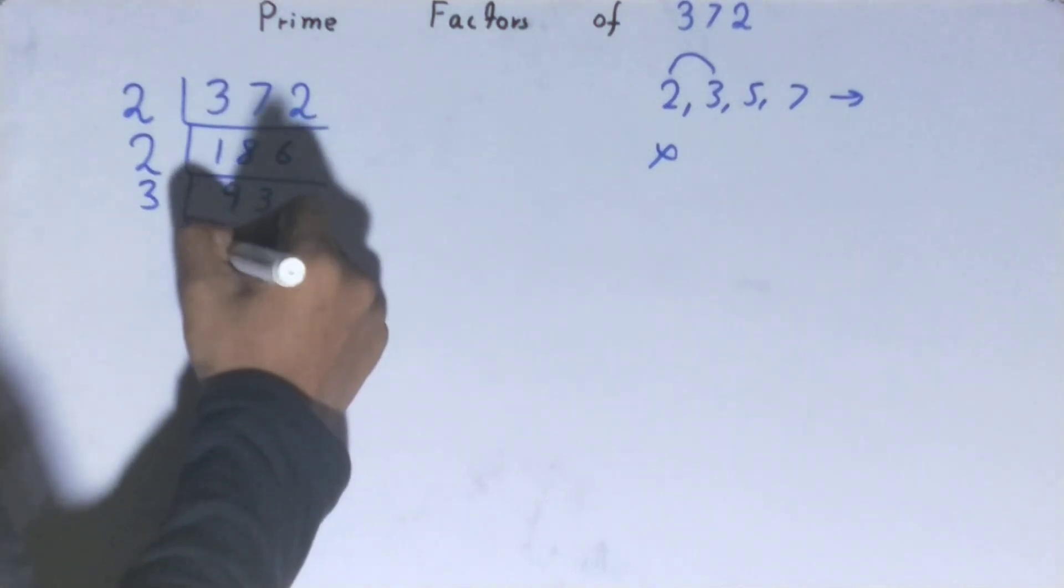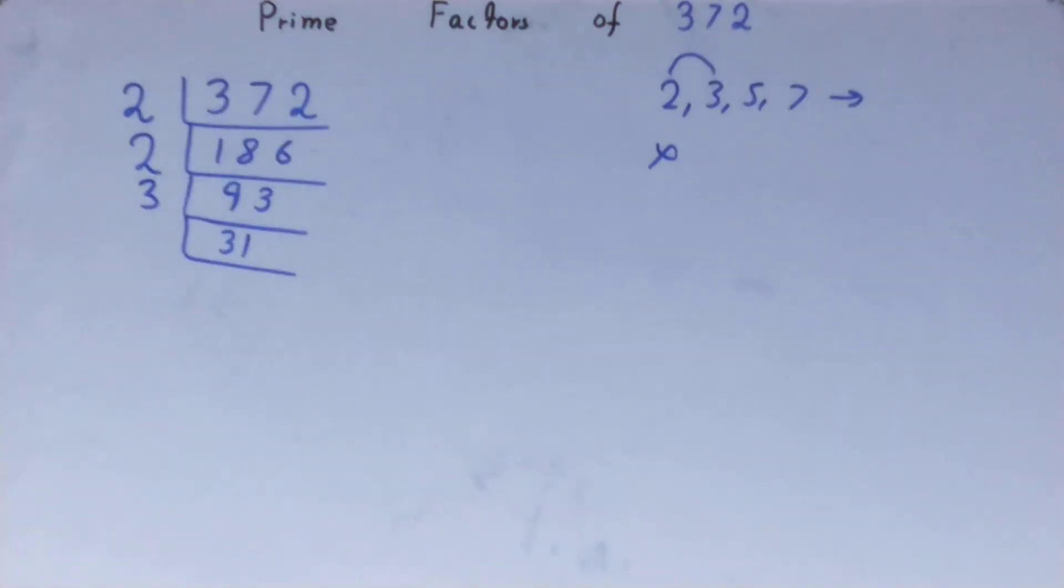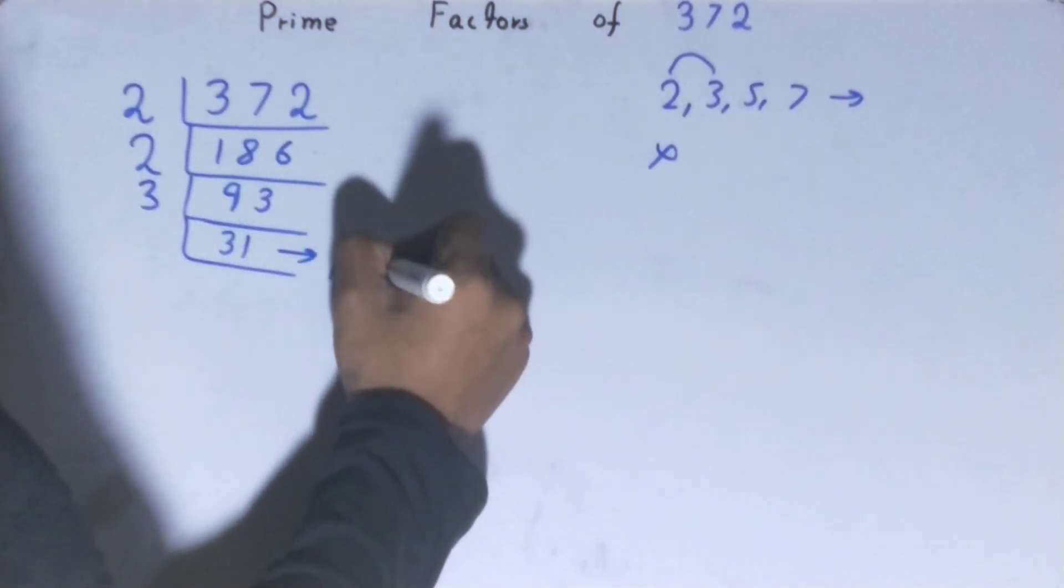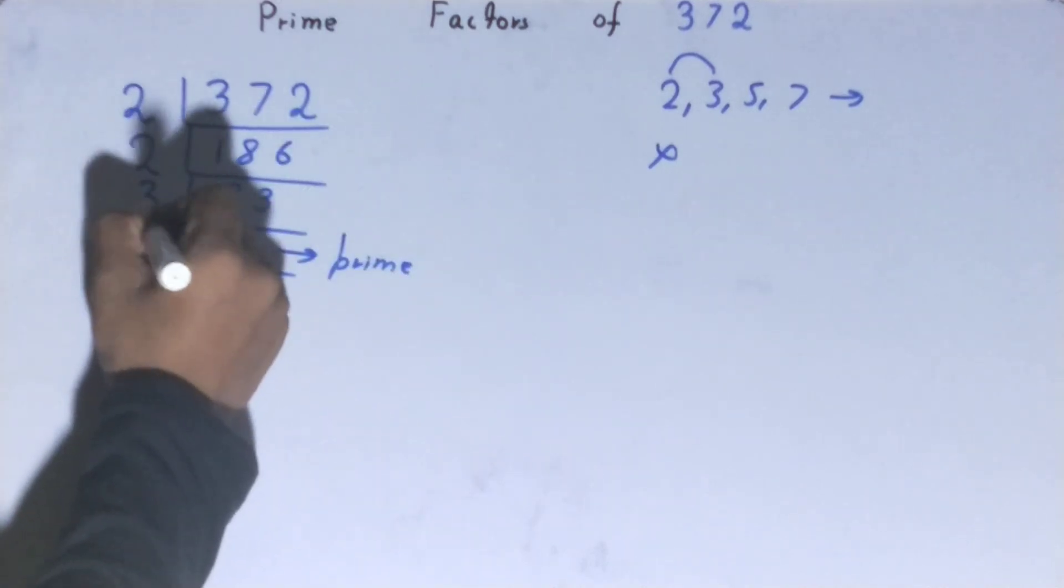Now this 31 is further not divisible by 3 because 31 is itself prime. So it is only divisible by itself. So to divide this 31, you need 31 on the left-hand side.